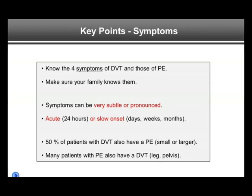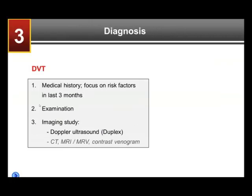It is very frequent that smaller clots break off from a DVT. Conversely, many patients with PE also have a DVT, which can be in the leg, or if the leg duplex ultrasound is negative, one could postulate that the clot came from the pelvis or perhaps the abdomen.